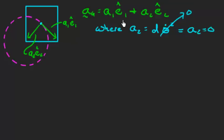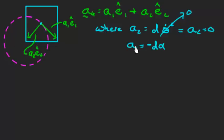The tangential component A1 = D·α. With a positive α defined as counterclockwise, a positive α gives acceleration in the minus ê₁ direction, so the actual tangential acceleration magnitude is D·|α| = D·(3g/8b) in the ê₁ direction. This gives the acceleration of the center of mass as (3gD)/(8b) in the ê₁ direction.